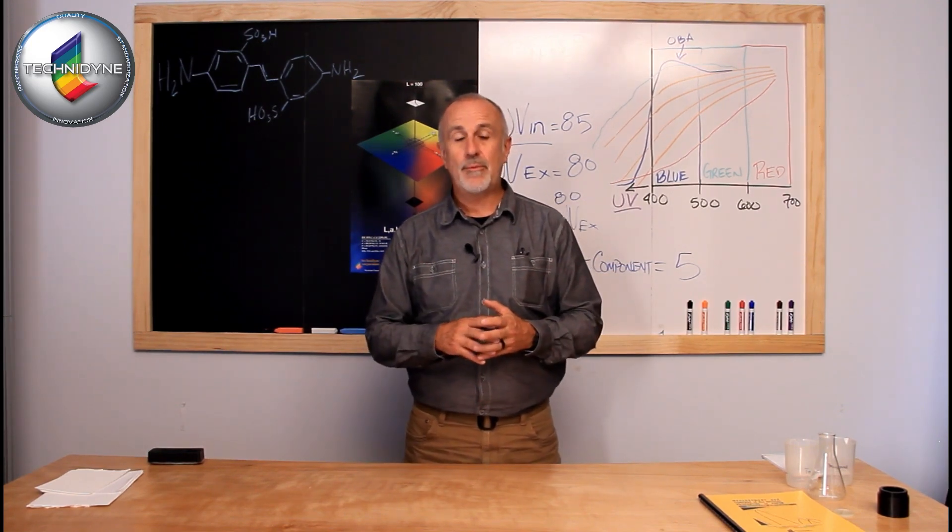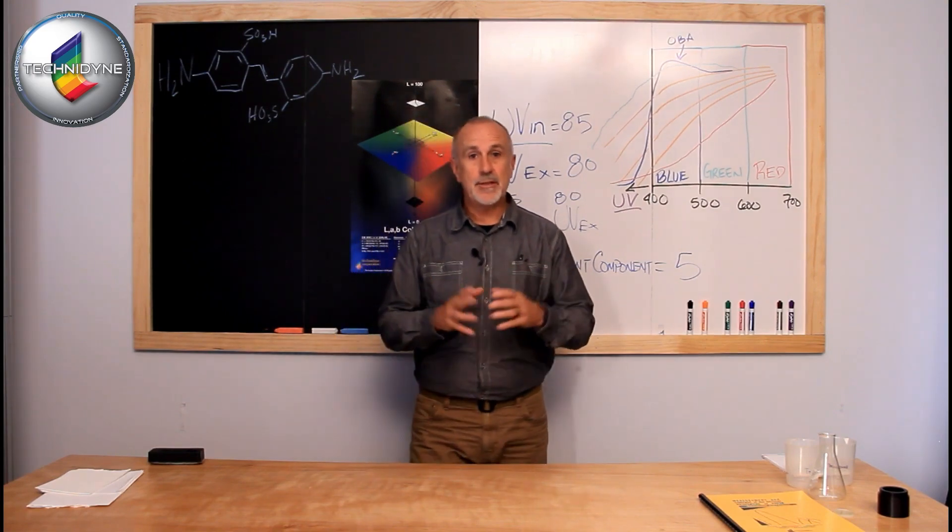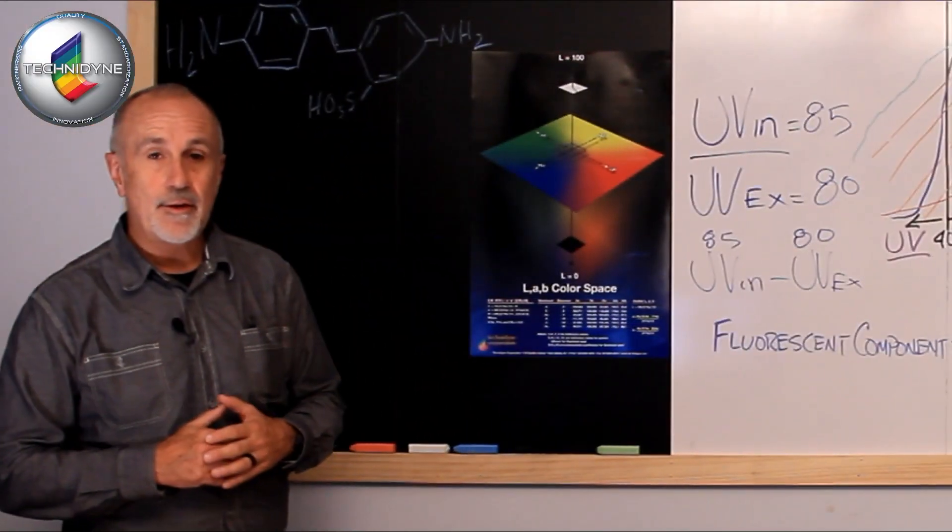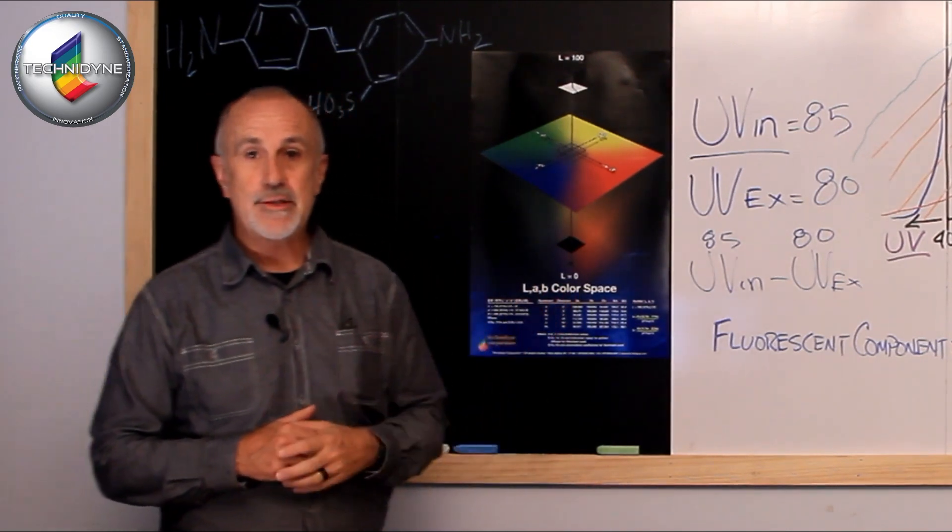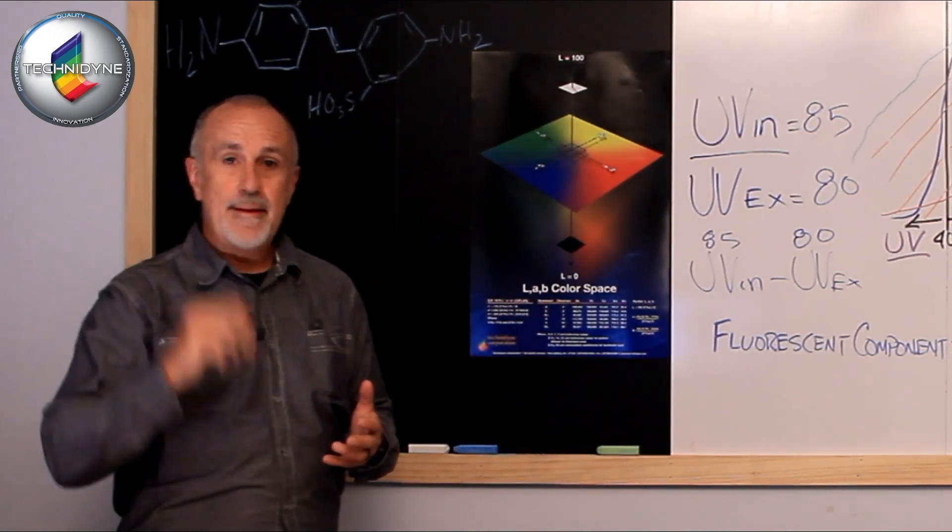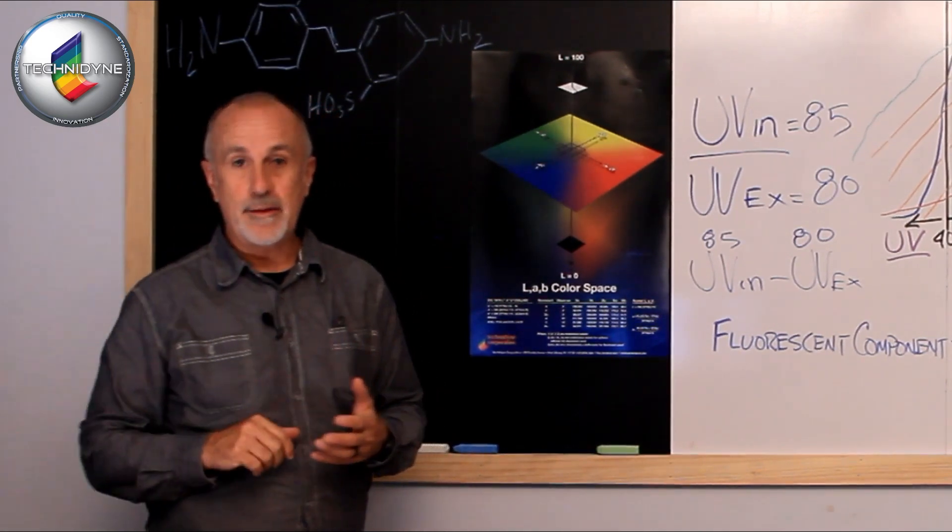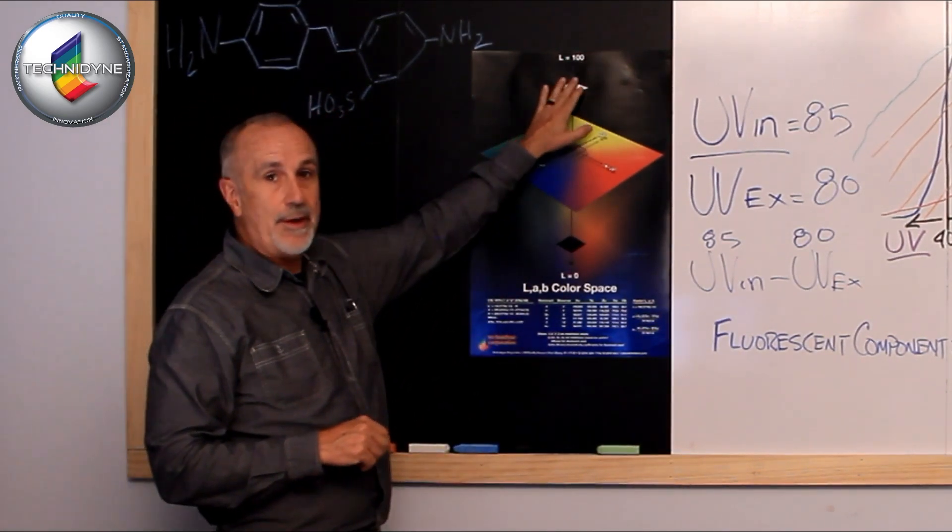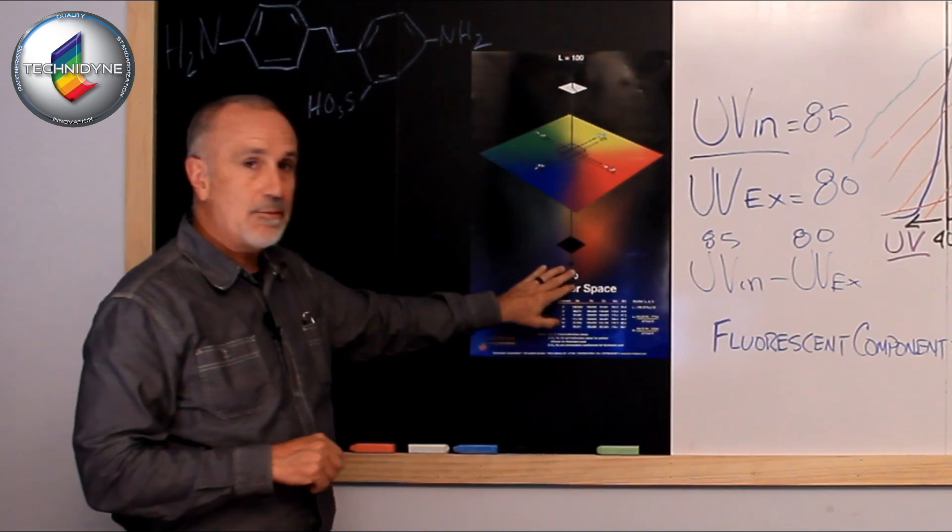Just as a quick overview, when you think of color, whether it's LAB or L star A star B star, it's based on three parameters. With L or L star being a lightness darkness axis, so L of 100 is up here at white and L of 0 is down here at the perfect black.